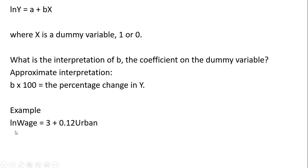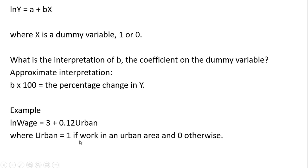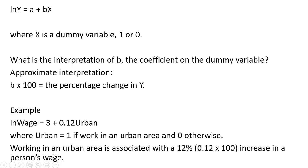Let's do an example. We have a regression where we estimate that the natural log of a person's hourly wage equals 3 plus 0.12 times urban, where urban is a dummy variable that equals 1 if a person works in an urban area and 0 if the person works in a non-urban, rural area. Working in an urban area is associated with a 12% increase in a person's hourly wage — I just took 0.12 and multiplied it by 100.